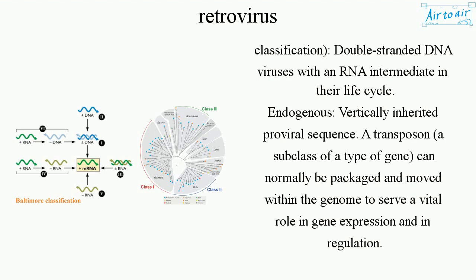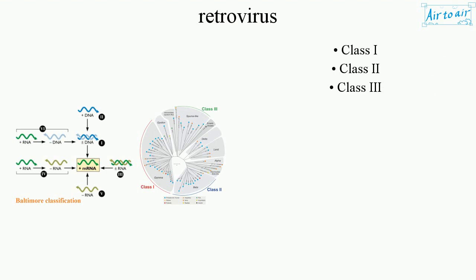Endogenous: vertically inherited proviral sequences. A transposon, a subclass of a type of gene, can normally be packaged and moved within the genome to serve a vital role in gene expression and in regulation. Class I, Class II.